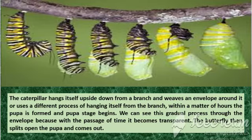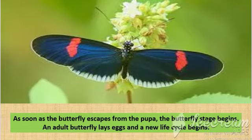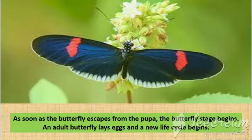The butterfly then splits open the pupa and comes out. As soon as the adult butterfly escapes from the pupa, the butterfly stage begins. The butterfly sucks nectar from flowers and flies from place to place. An adult butterfly lays eggs and a new life cycle begins.